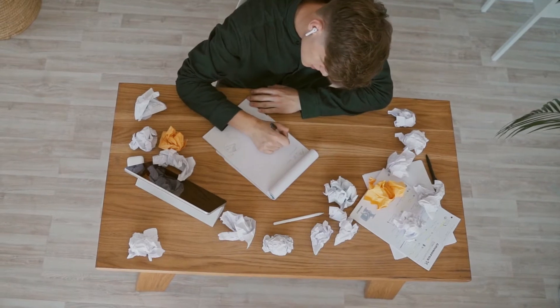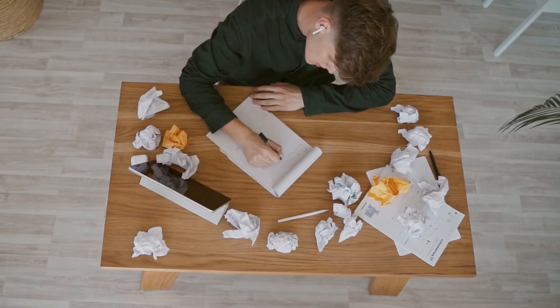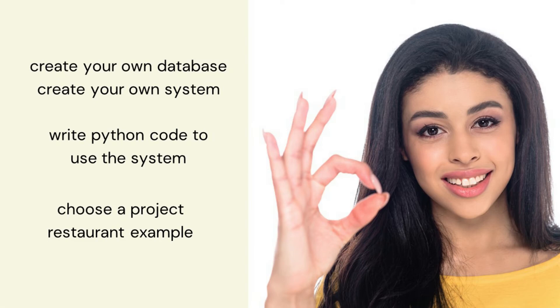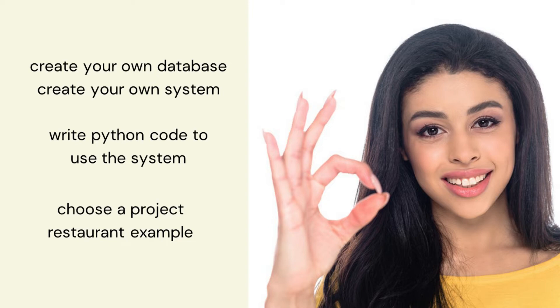Let's start off by knowing what to create. In this series we're going to look at how you can create your own database and your own system, writing Python code to use it. To start off with, you need to choose a project. In these slides we use a restaurant as an example.